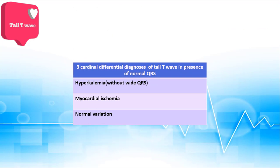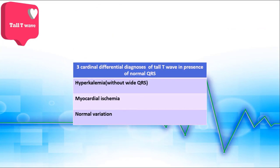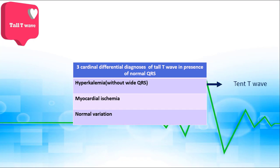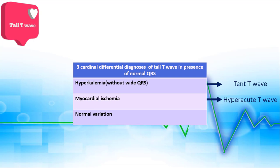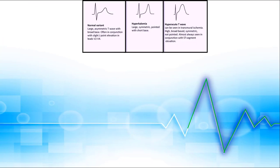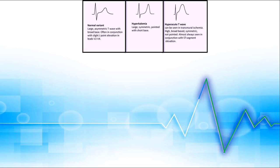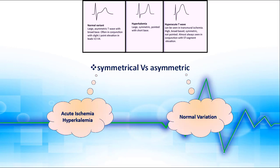In the case of normal QRS complex, three cardinal differential diagnoses must be considered: one, hyperkalemia, also known as tent T waves; two, early stages of acute ischemia, known as hyper-acute T; and three, normal variation. Medical history and other lab findings are useful to differentiate them. Several extra findings in the electrocardiogram can also help us differentiate these three.